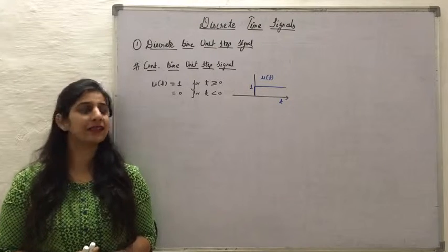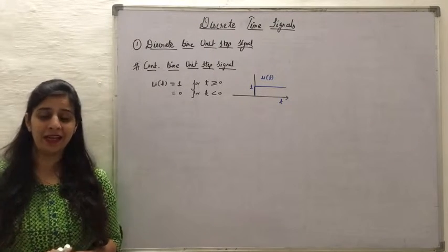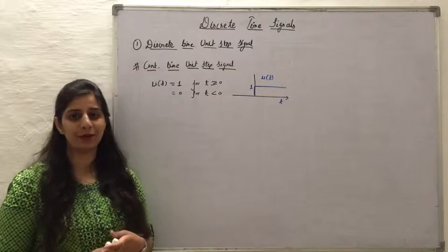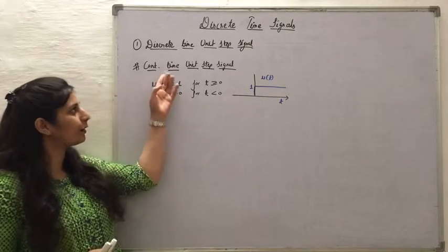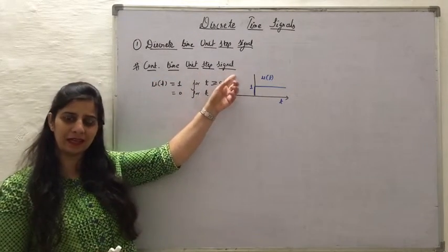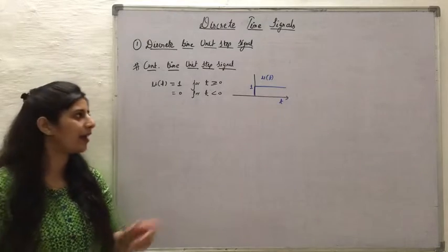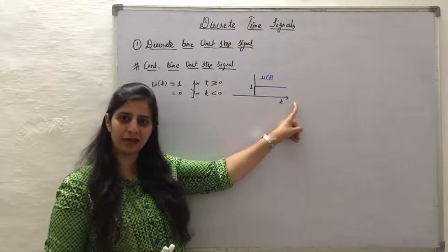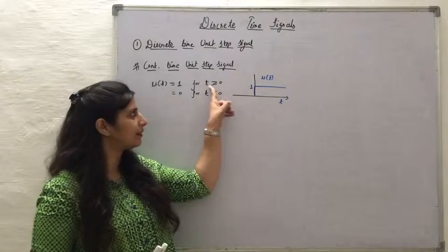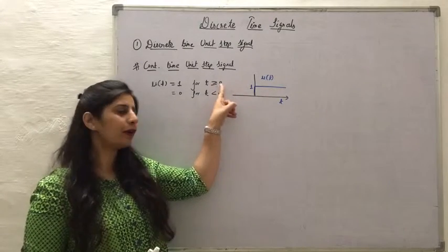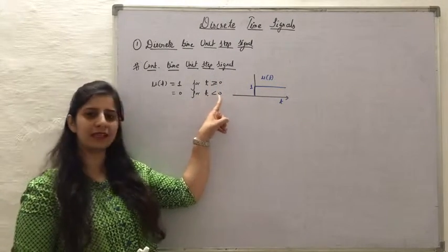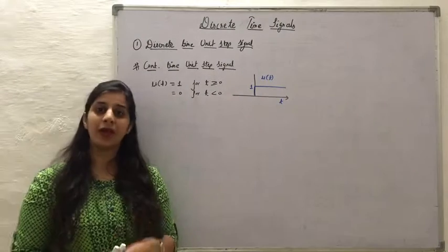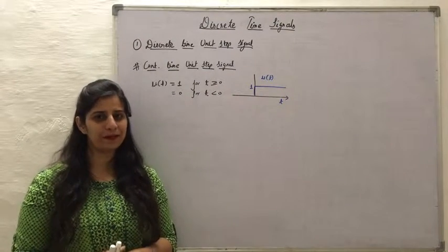Before discussing the discrete time unit step signal, let's review the continuous time unit step signal. It had a value of 1 for all time instances when t was greater than or equal to 0, and a value of 0 for t less than 0.